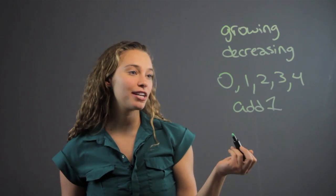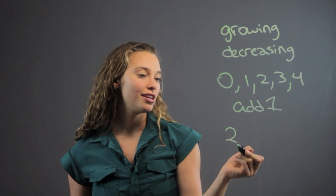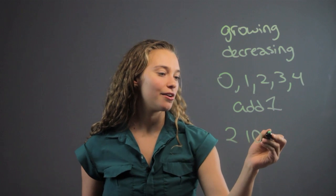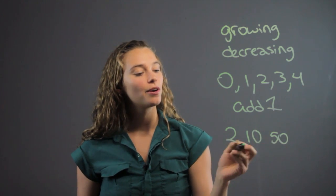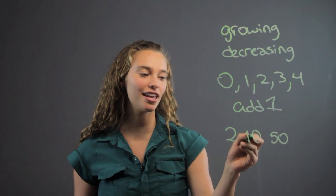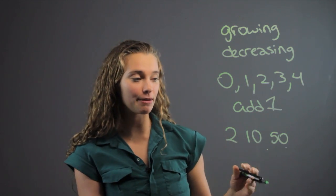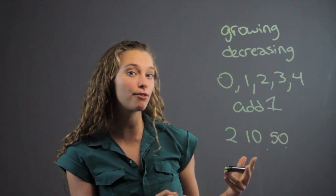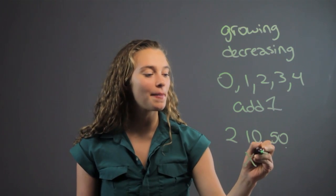Then you can have them do something a little bit more complicated. Maybe this one starts with two, and it goes to ten, and then it goes to fifty. What are you doing here? We are multiplying that number by five. Two times five is ten, ten times five is fifty. This might be a little bit more complex, but this is something that second graders are maybe starting to learn as multiplication times tables. So here, you're multiplying by five.